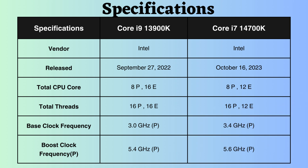When comparing the base clock frequency of both processors, the Core i7 has a slightly higher frequency. However, due to the higher number of cores in the Core i9, it is suggested that the Core i9 performs slightly better.